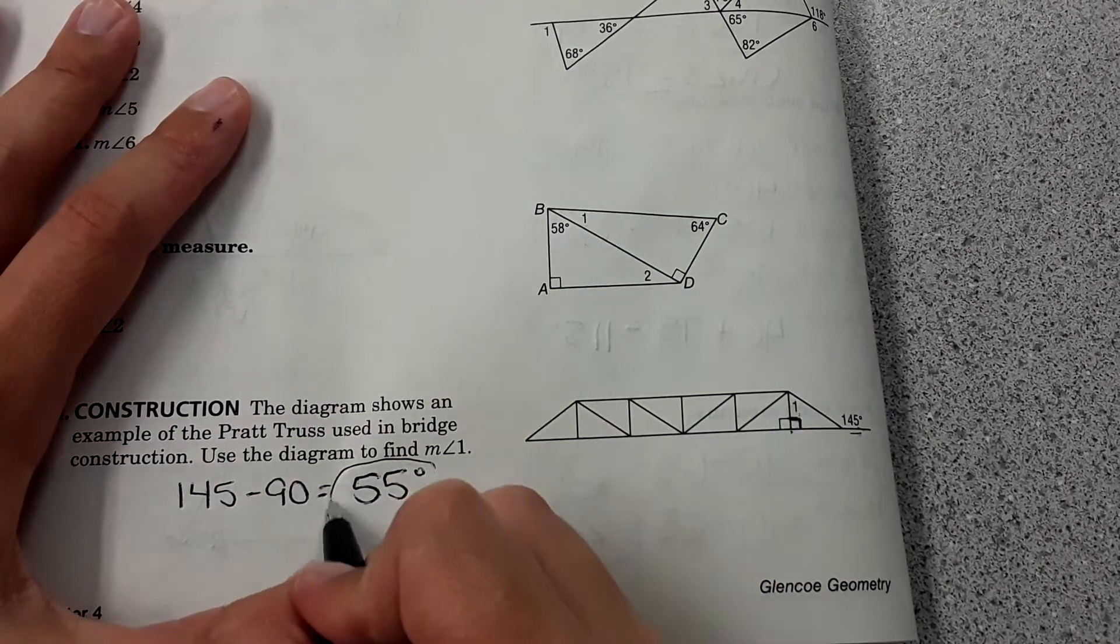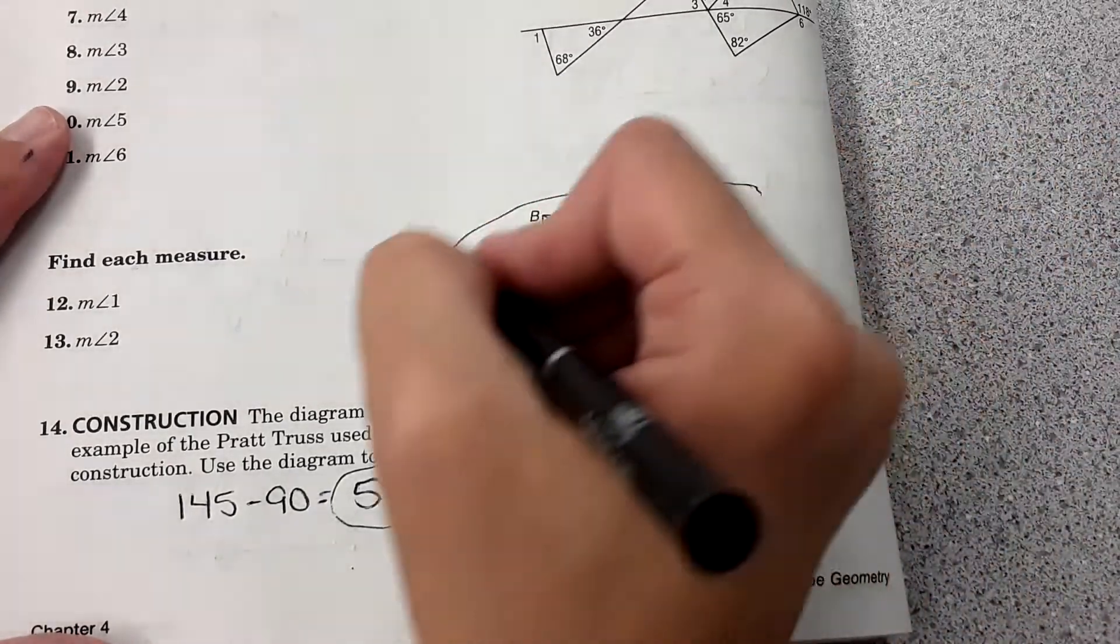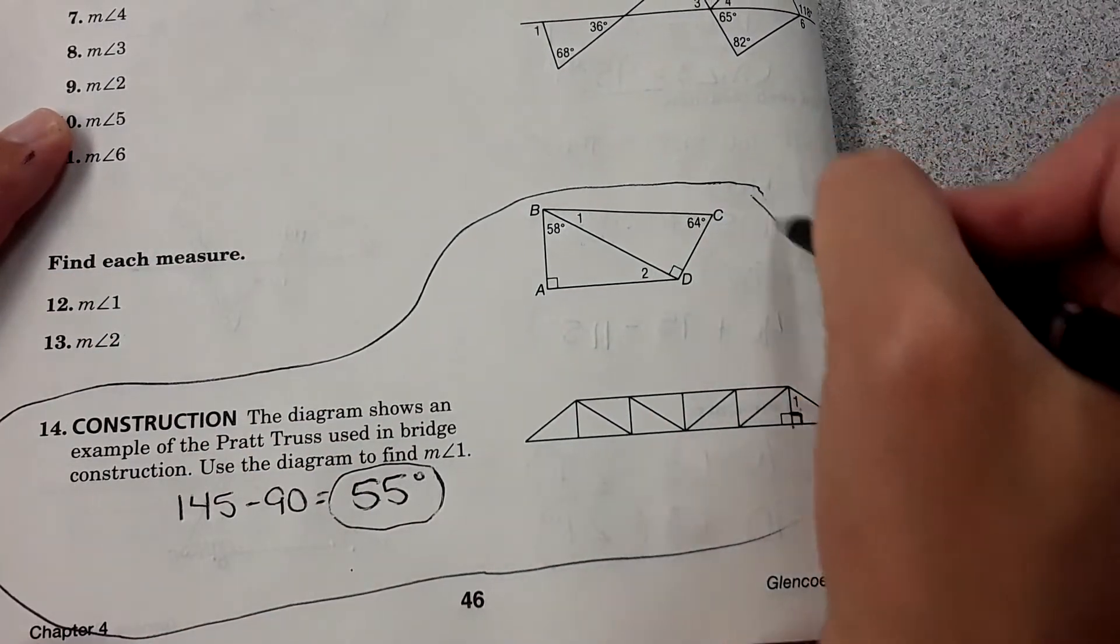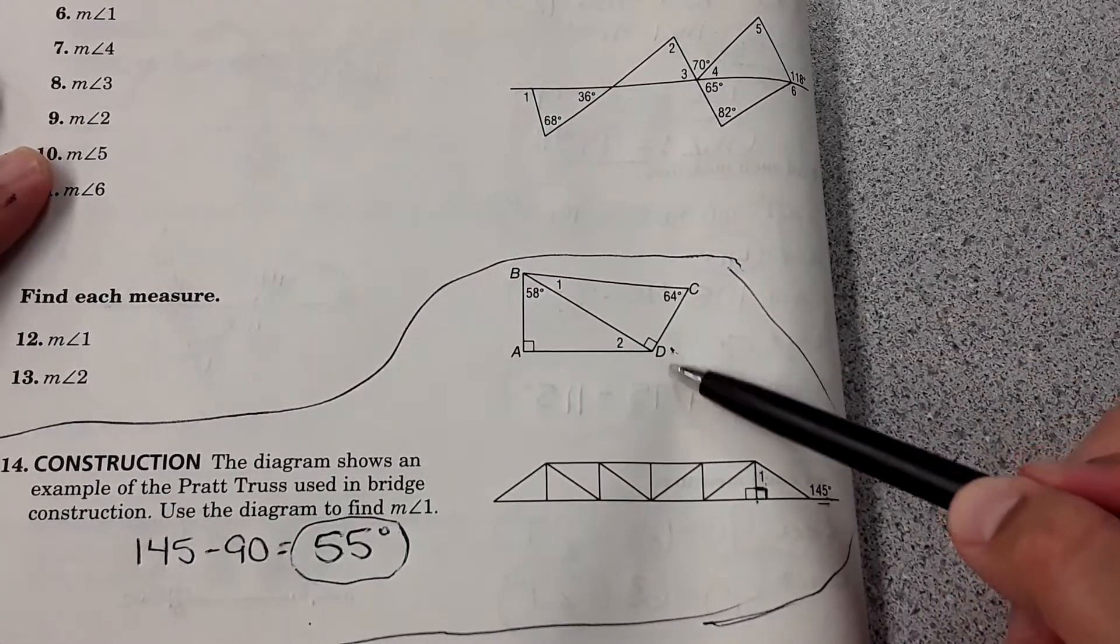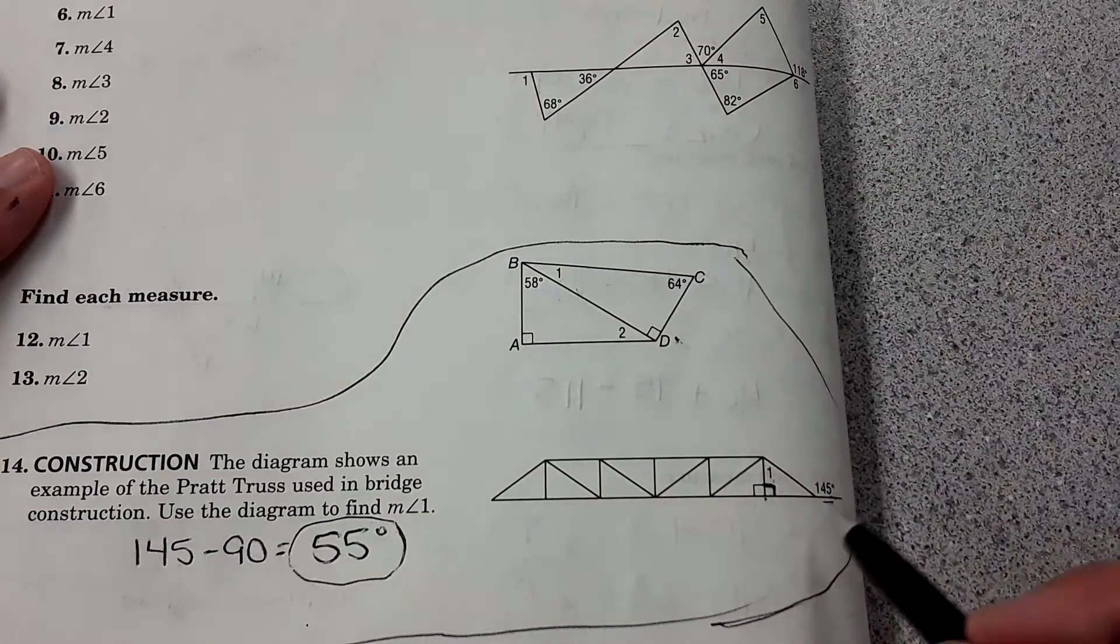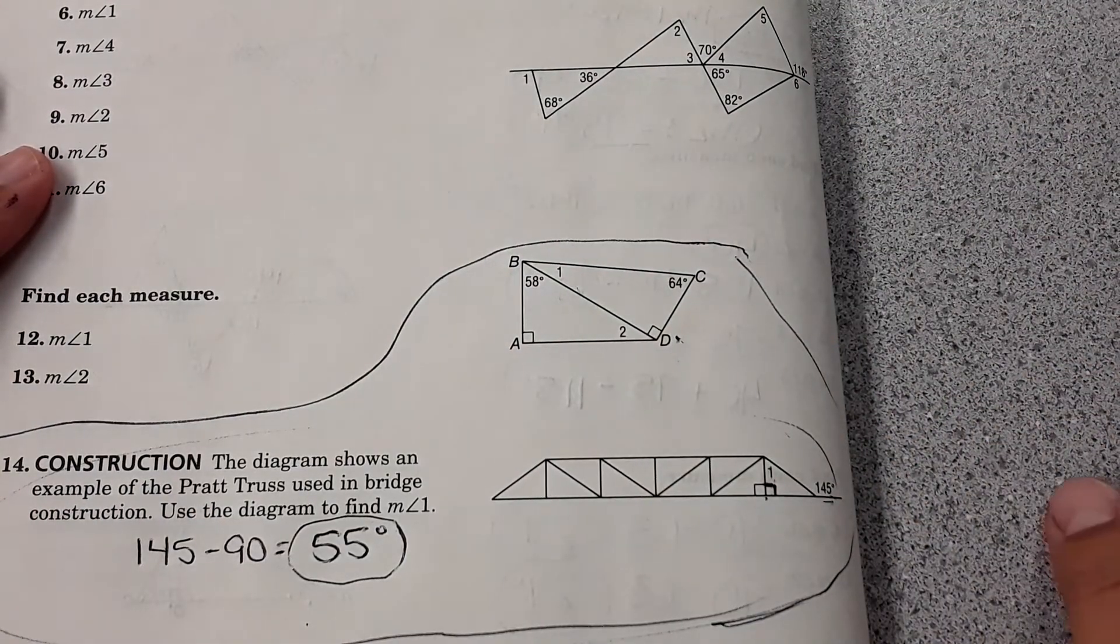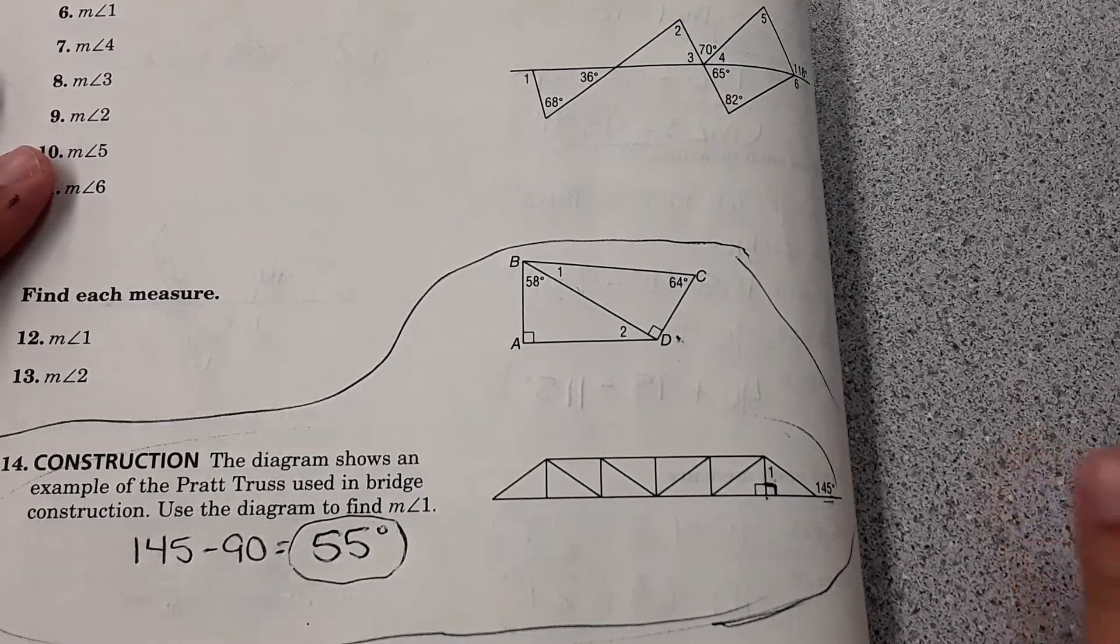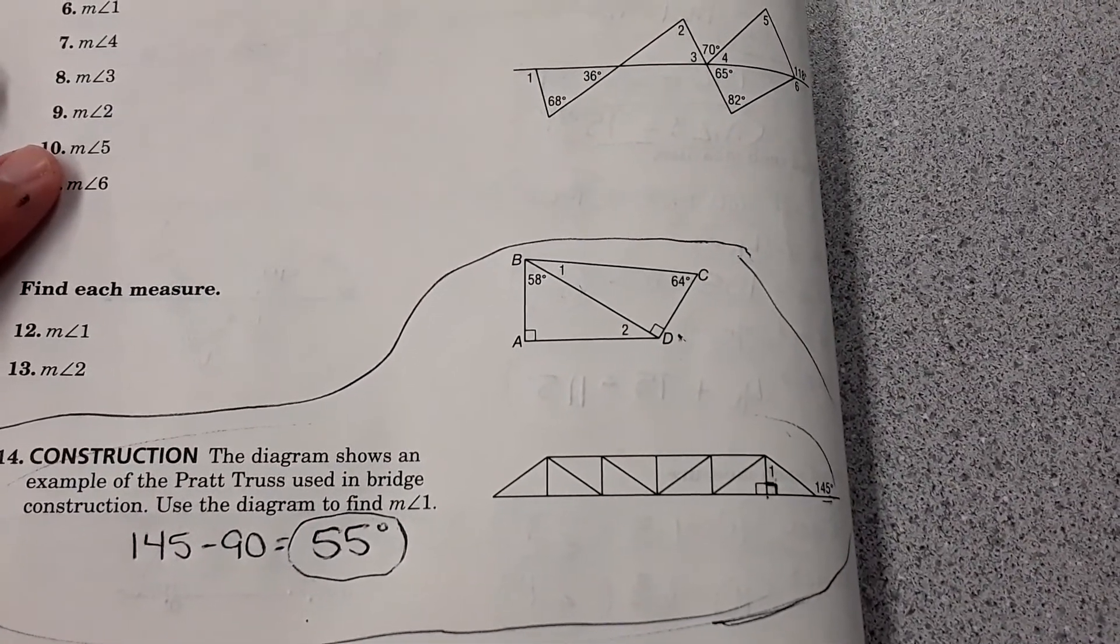So measure of angle one is 55 degrees. On the homework for whatever reason, the question looks like this. Obviously there was a formatting issue when it was transferring into Schoology and it included that question as part of the question. Just ignore that that's there and just look at this part of the problem. When you get it on the homework, this homework is much easier than even yesterday, so I think you'll do well.